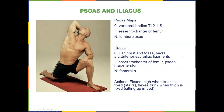The iliacus originates from the iliac crest and fossa, sacral ala, and anterior sacroiliac ligaments. It inserts into the lesser trochanter of the femur, joining the psoas major tendon — so they share the same insertion. It's innervated by the femoral nerve, and the action of both muscles is to flex the thigh.